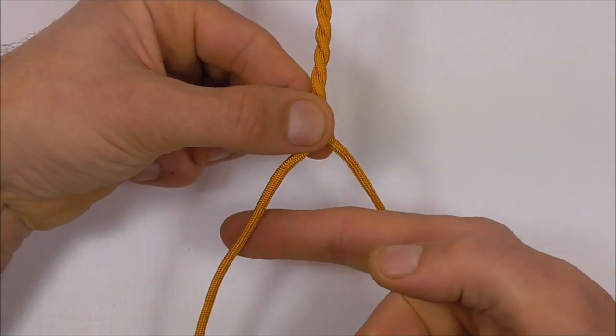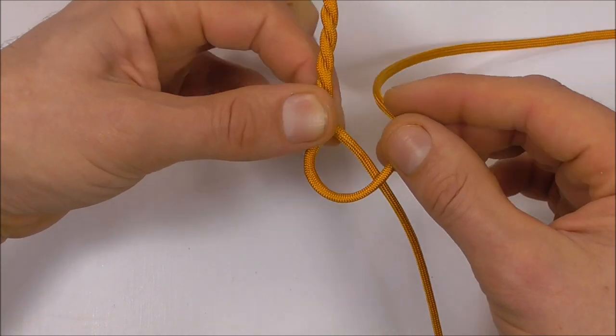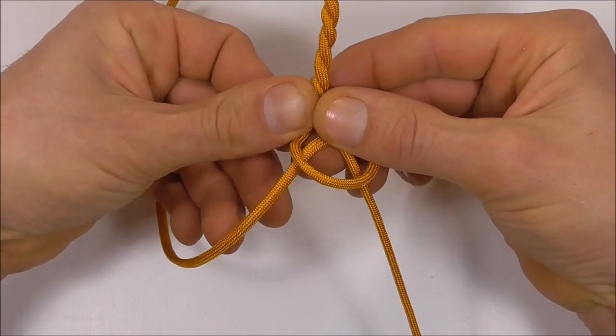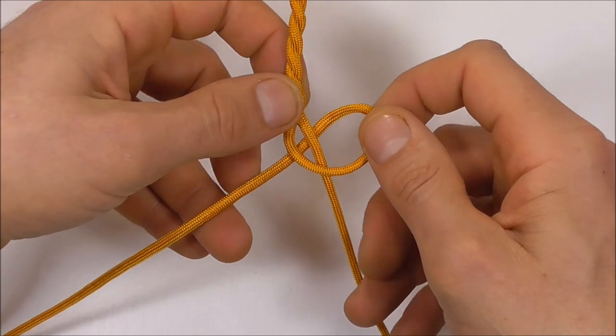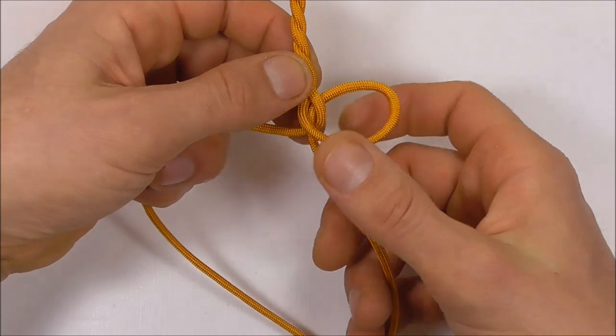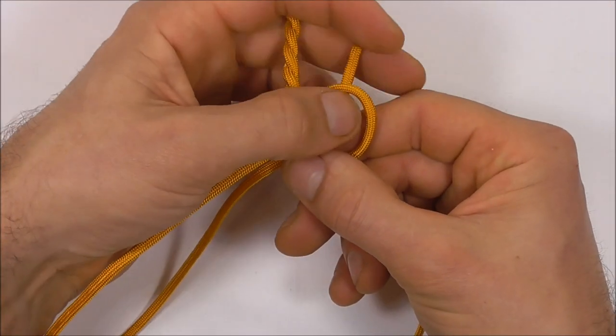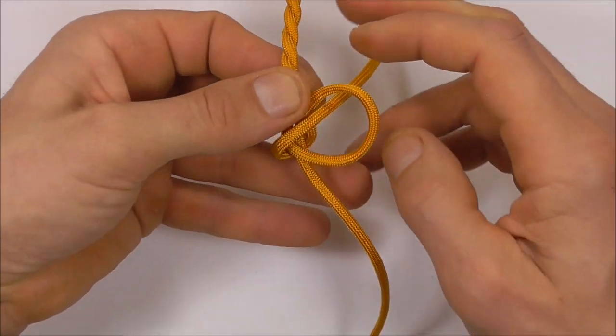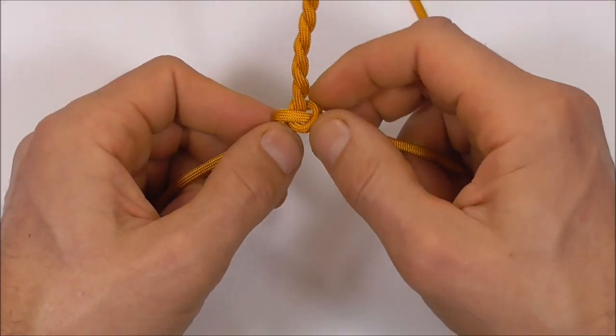Then I'm just going to pinch this off here and lock this twist off with another snake knot. So again I'm going to take that left strand over the right and then all the way around. Switch those two strands and then feed that down through the right loop, and tighten that down.